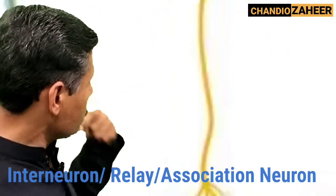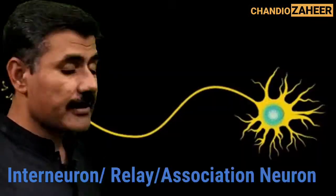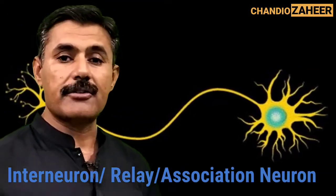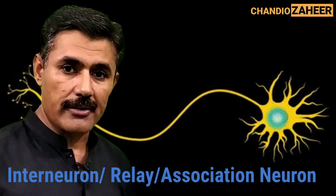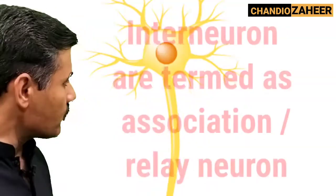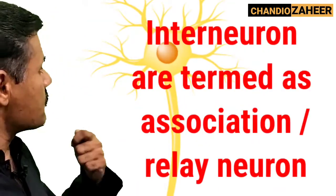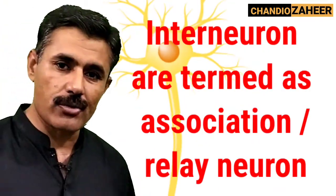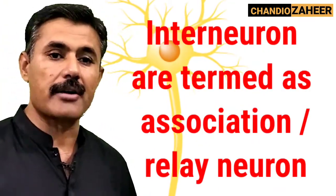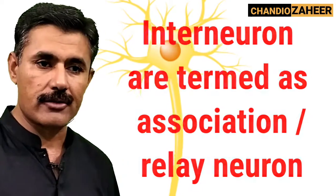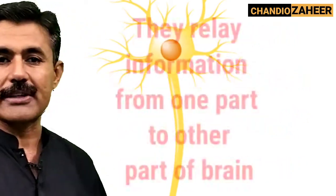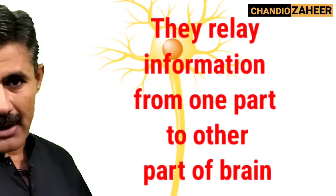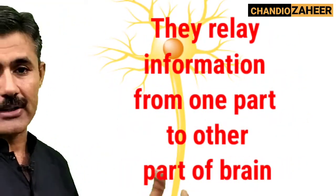We are going to study another kind of neuron today and it is inter-neuron. Inter-neurons are also termed as association neurons or relay neurons, as mostly they relay information from one part of brain to another part.